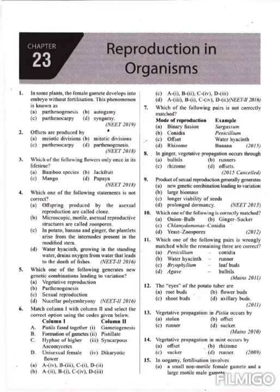The first question is: in some plants, the female gamete develops into an embryo without fertilization. This phenomenon is known as parthenogenesis. When fusion of the male gamete and the female gamete occurs, the term is syngamy; without fertilization, the term is parthenogenesis.